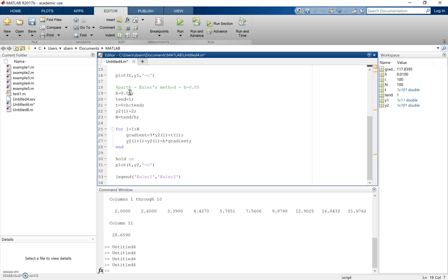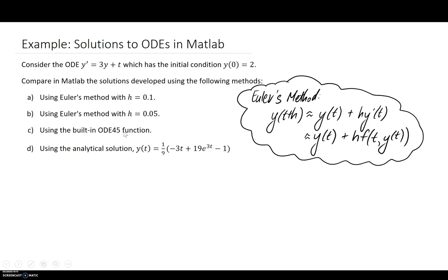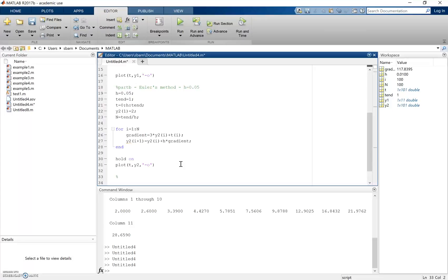The next thing is plotting the ODE45 solution — that's part C. ODE45 is a built-in MATLAB function that relies on the Runge-Kutta method, which I discussed in a previous video. It's more accurate than Euler's method and automatically adjusts the step distance internally to maintain a good level of accuracy.